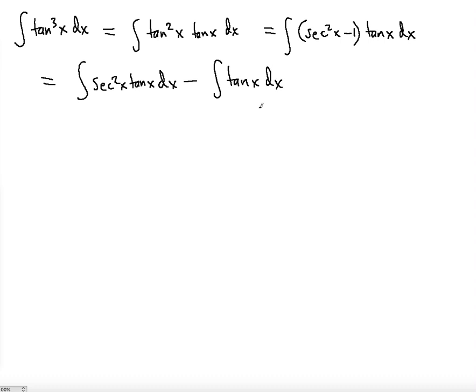Here this is straightforward: u is equal to tan(x), du is precisely sec²(x)dx. This times the sec² is the du, so you're going to have ∫u du.